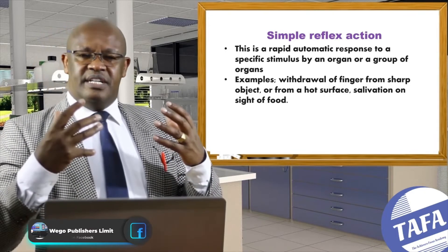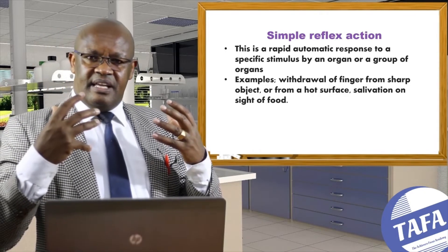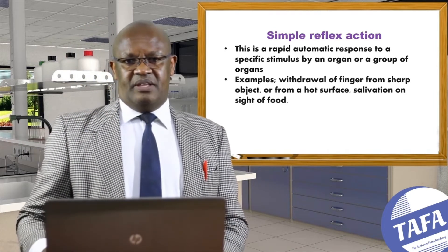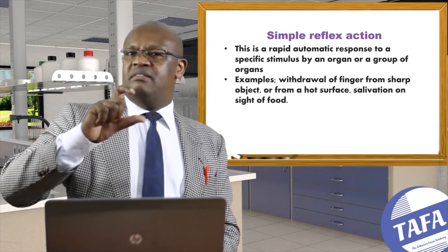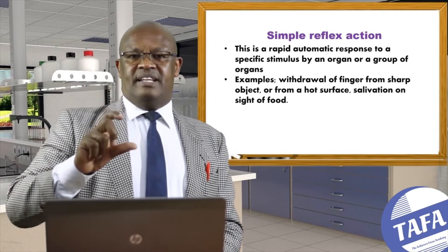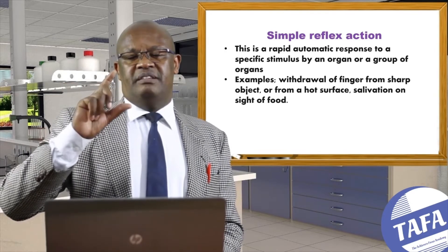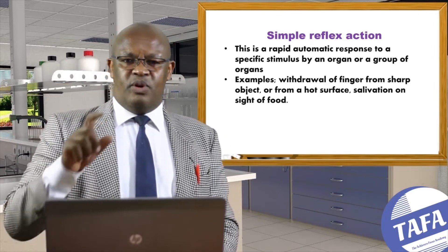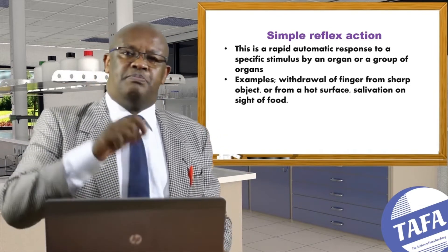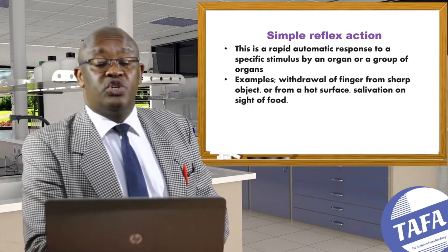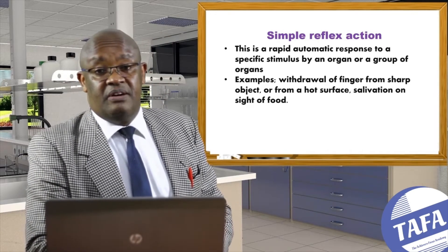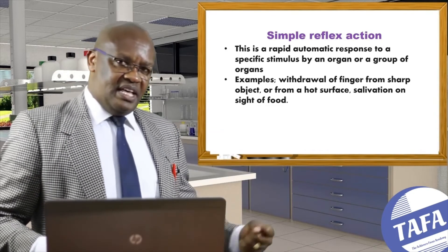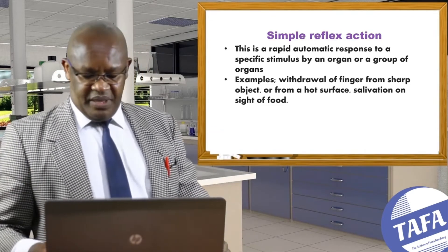Reflex action does not require the brain. The impulse being transmitted does not go to the brain. Instead, it passes through the spinal cord. The spinal cord does not play a role in coordination or integration — it only plays the role of relaying the impulse from the receptor to the effector.